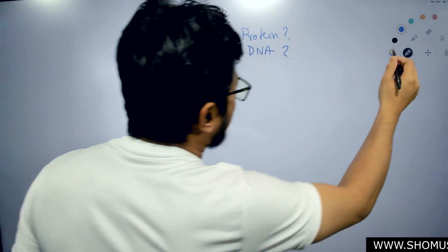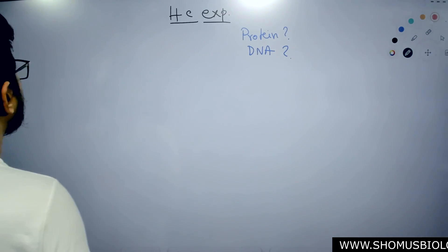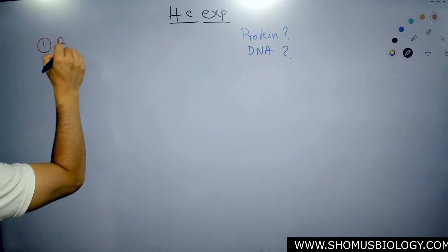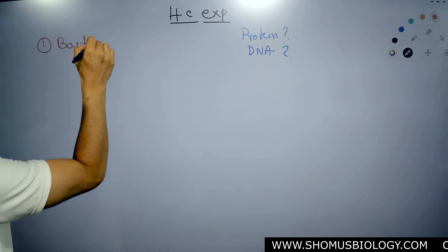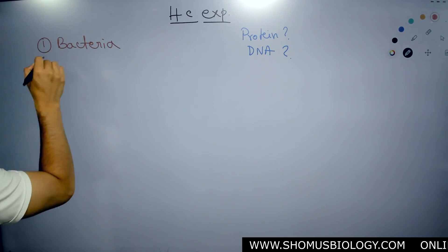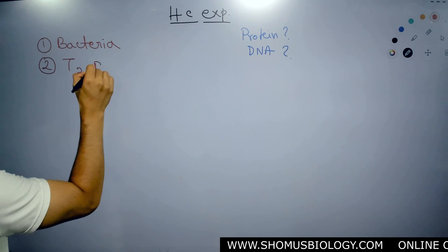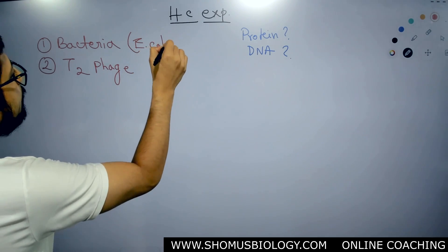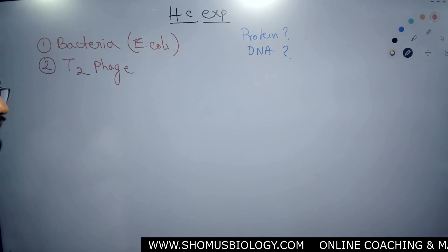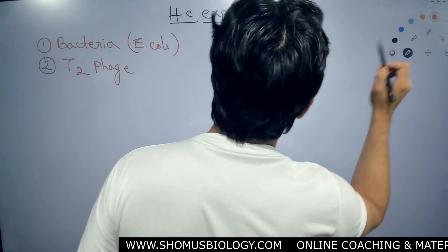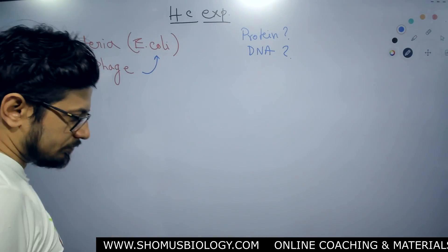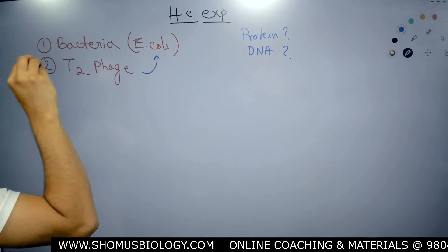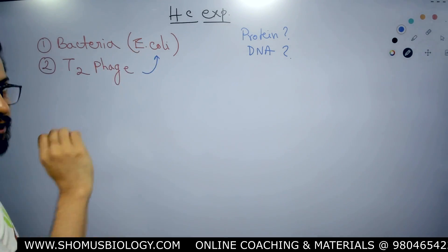How exactly they proved this idea is that they utilized two things: one, they use a bacteria — E. coli — and two, they use a bacteriophage, that is T2 phage. T2 phage by nature attacks E. coli, and T2 phage spreads its genetic material inside the bacteria.